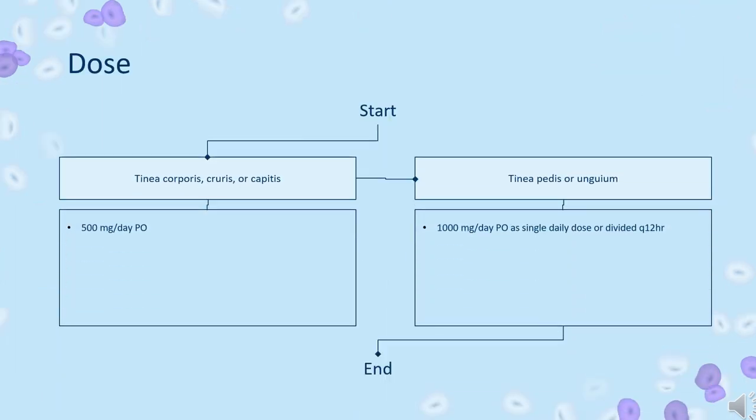Dose — Tinea infection. Infections affecting skin, body, hair/beard, or nails. Microsize: Tinea corporis, cruris, or capitis — 500 mg per day, PO. Tinea pedis or unguium — 1000 mg per day, PO, as a single daily dose or divided every 12 hours.